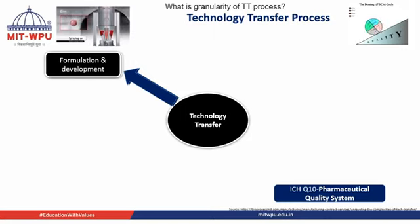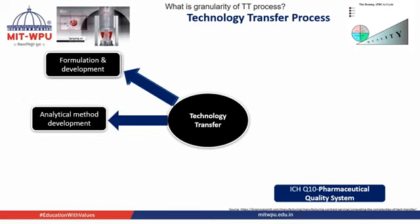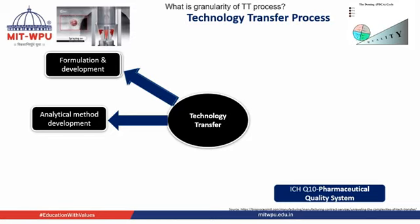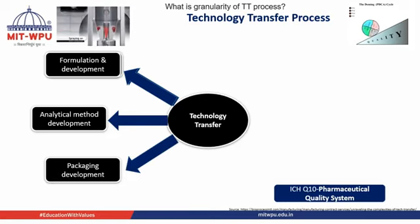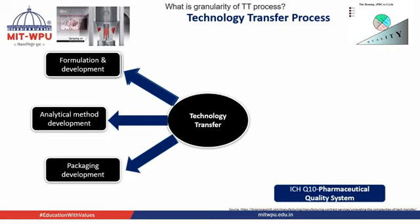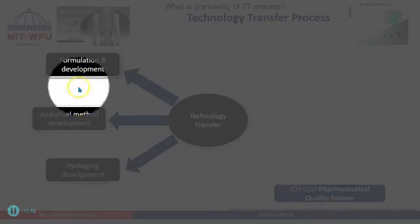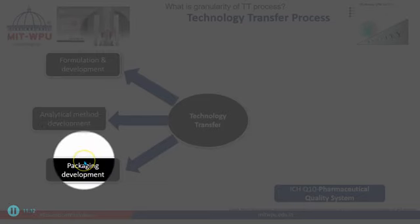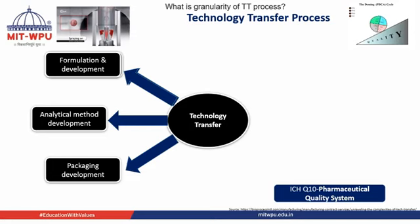This is what we can call the granularity of the technology transfer process. What is the granularity of this technology transfer process? It has various facets. We have to always start with formulation and development — we develop the formula and continuously evaluate that formula. Then we have to understand the analytical methods — we develop the particular method to analyze the constituents and other important components. Then we have to understand the packaging, which is very important. We have to develop a good packaging system so that it will be compatible with your formula.